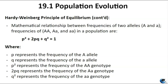The Hardy-Weinberg Principle describes the mathematical relationship between the frequencies of two alleles — big A and little a — and the frequency of three possible genotypes — AA, Aa, and aa — in a population: p² + 2pq + q² = 1. Also, p + q = 1. Here, p represents the frequency of the big A allele, q is the frequency of the little a allele, p² is the frequency of the AA genotype, 2pq is the frequency of the Aa genotype, and q² is the frequency of the aa genotype.